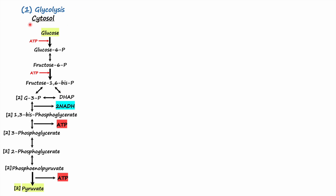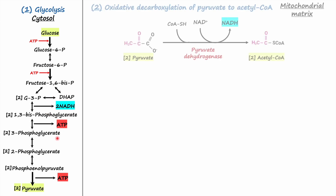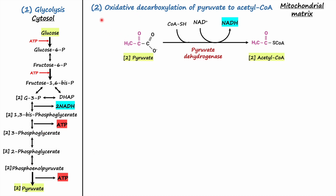In glycolysis, which takes place in the cytosol, one molecule of glucose is broken down into two molecules of pyruvate. During the process, it also generates two NADH in the cytosol. The second stage is the oxidation of pyruvate.